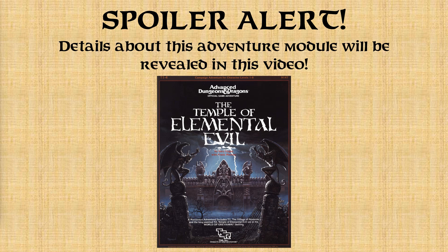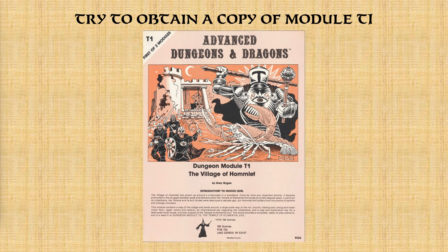The first thing I'd advise is try to obtain a copy of the original module T1, the Village of Hommlet, mainly because it includes more details about the village that are not included in the Temple of Elemental Evil module. It's not critical if you can't find it — you can get the PDF on DriveThruRPG. So if you can, try to get a copy of it.